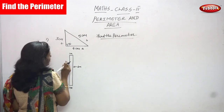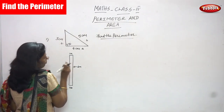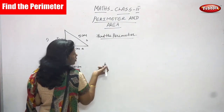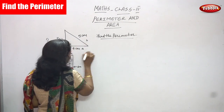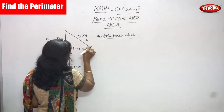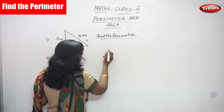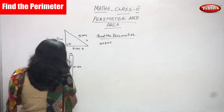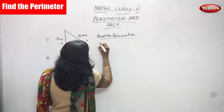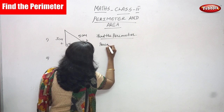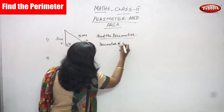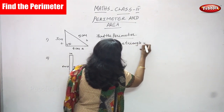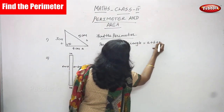Now we are going to find the perimeter of the right triangle. The heading is 'Find the Perimeter.' To find the perimeter, you have to add all three sides. The formula is: perimeter of a triangle equals a plus b plus c.